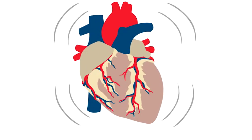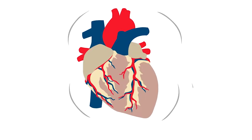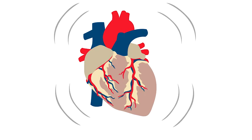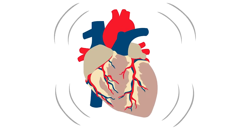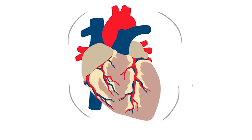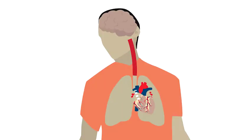Cardiac arrest can occur when the electrical impulses that cause the heart to contract rhythmically become abnormal, disorganized, and chaotic. The heart will stop beating or beat too ineffectively to circulate blood to the brain and other vital organs.